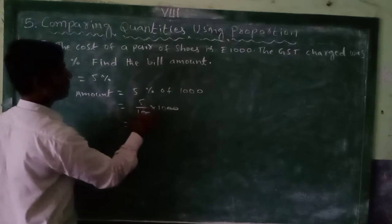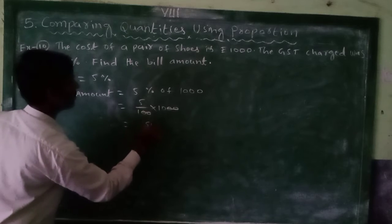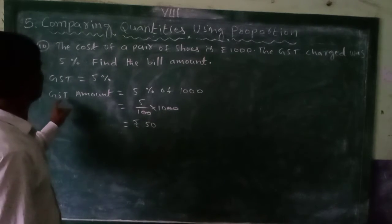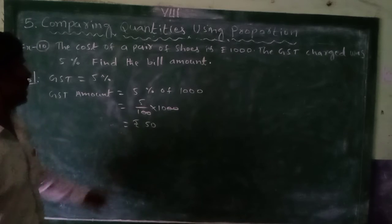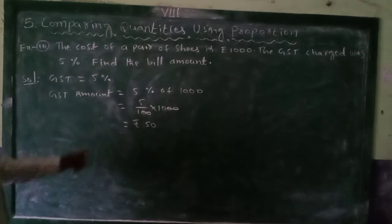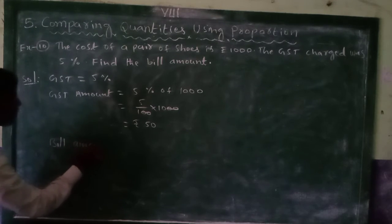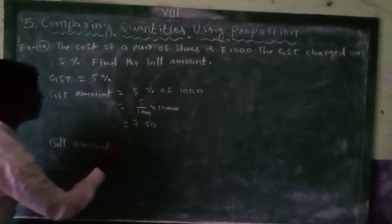5 into 10 is 50, rupees 50. Rupees 50 is the GST amount. Okay, so bill amount equal to - okay, you have to find the bill amount. Bill amount...